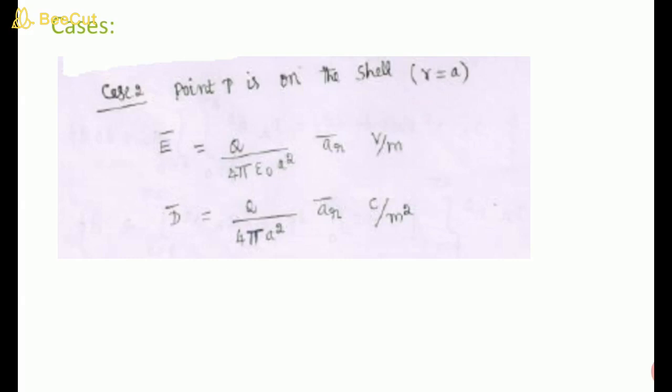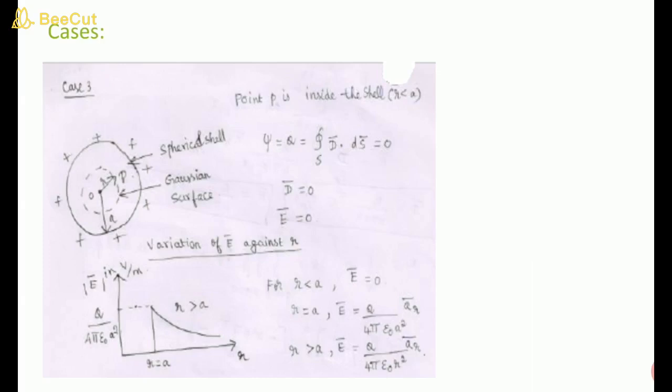So inside the shell E = 0, on the shell E has the maximum value, and outside the shell E follows E = Q / (4πε₀ r²). The variation of E against r: for r < a, E = 0; at r = a, E is maximum; for r > a, E decreases. Students should note this graph. This concludes the discussion of Gauss law and its applications for this lecture — more topics will be covered in the next lecture. Thank you.